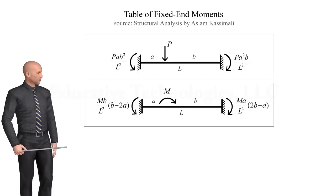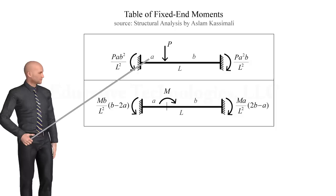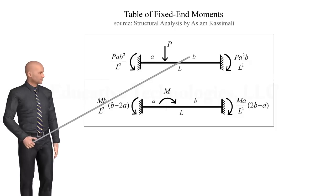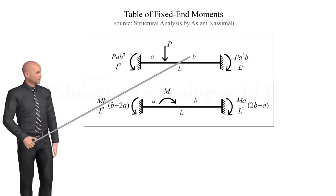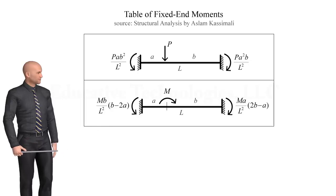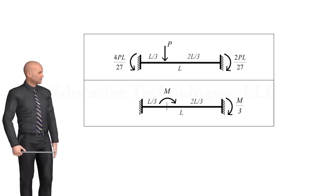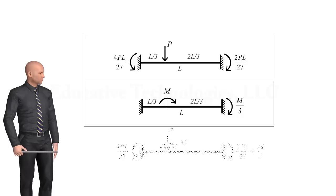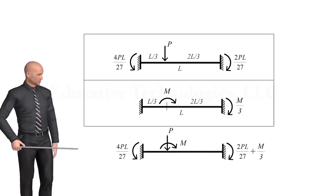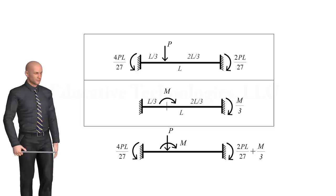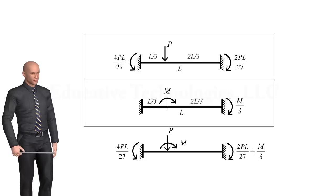To use these table entries for our beam, we can set A to L over 3, and set B to 2L over 3. By superimposing these two diagrams, we get the fixed-end moments for the combined loads. We can then determine the remaining reaction forces using the static equilibrium equations.